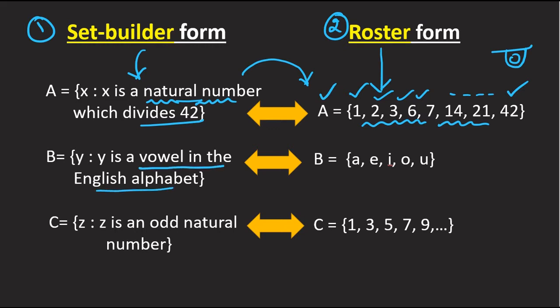Next example: vowels in the English alphabet — listed using the roster form. And then Z equals the set of odd numbers — that is set builder form. So set builder form and roster form are both illustrated here, with odd numbers as one example.